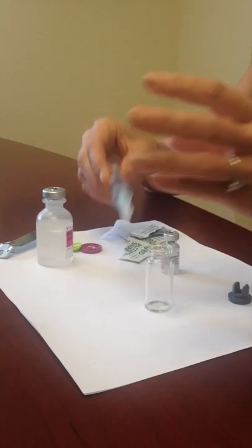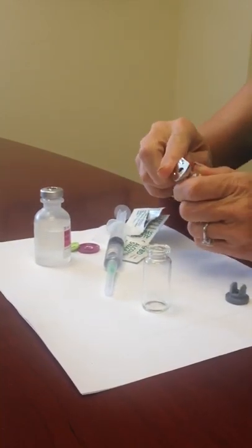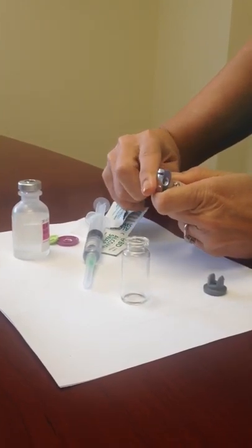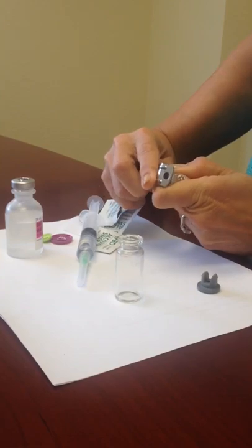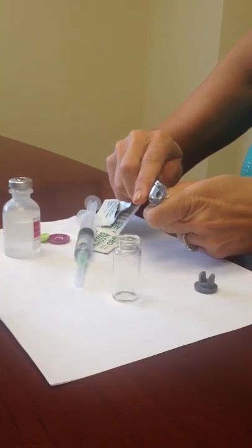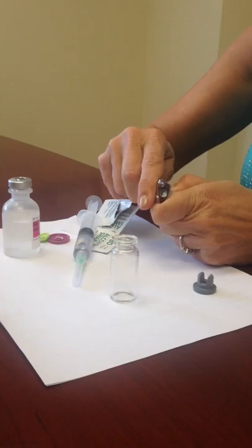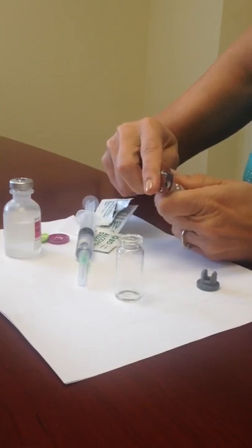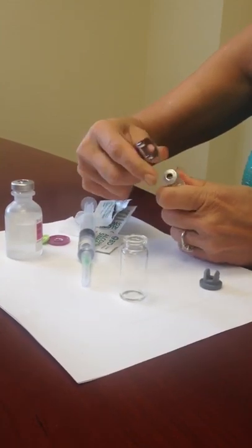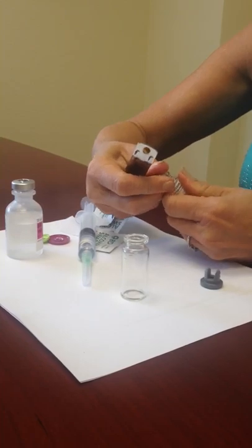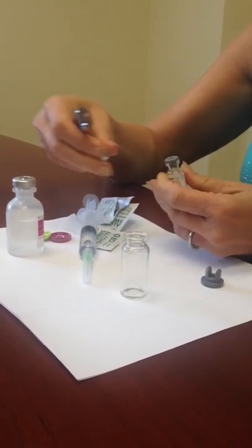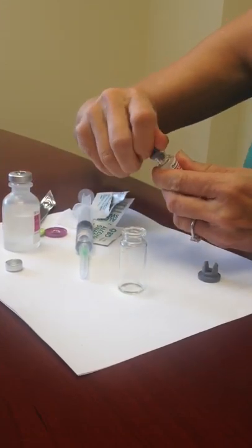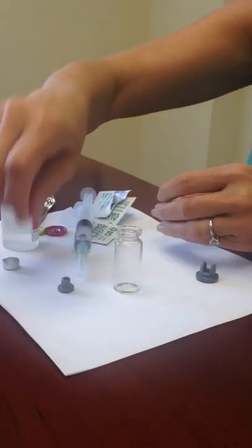Now we're going to remove the stopper on the Omnitrope. You have to be a little careful here because you don't want to break your precious vial. You just work around with your bottle opener and get rid of this little metal thing. You can just take that off, and then you remove your rubber stopper. You can just pull it out.